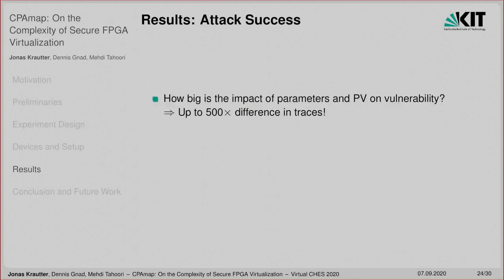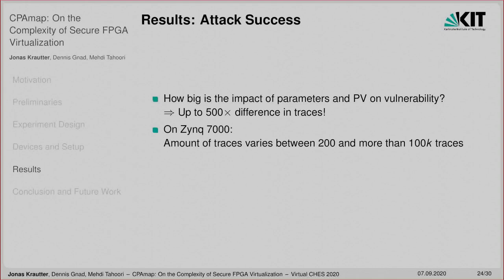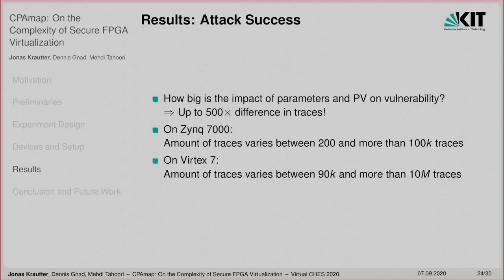When evaluating the impact of parameters and process variation on side-channel vulnerability of AES cores, we found that the difference in the number of traces required for a successful CPA attack reaches up to 500x. On the Zynq 7000, the required traces vary between 200 and more than 100,000, whereas on the Virtex-7, where we collected up to more than 10 million traces, the required amount varies between 90,000 and more than 10 million.